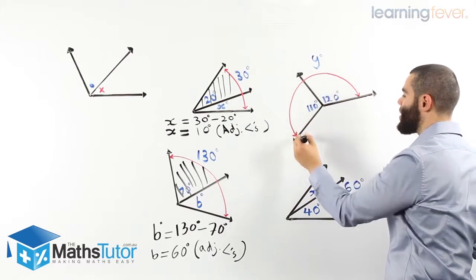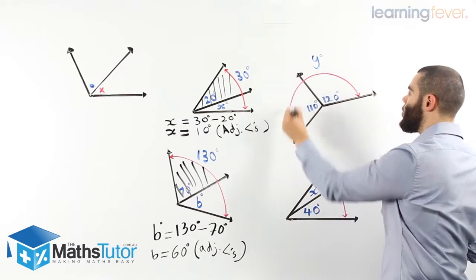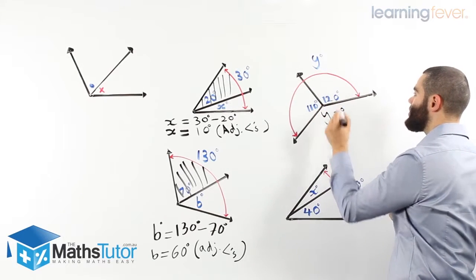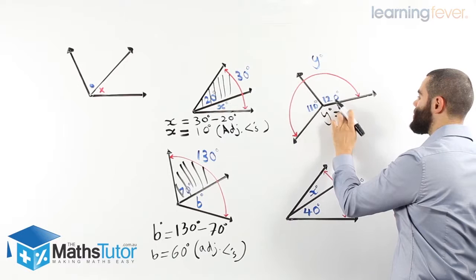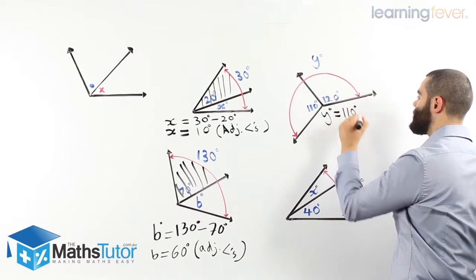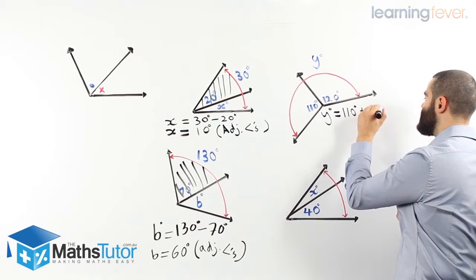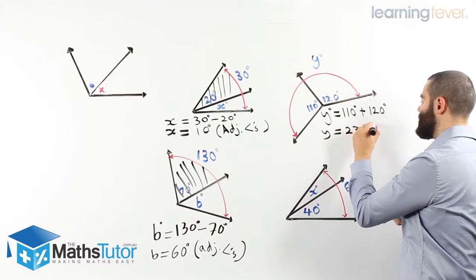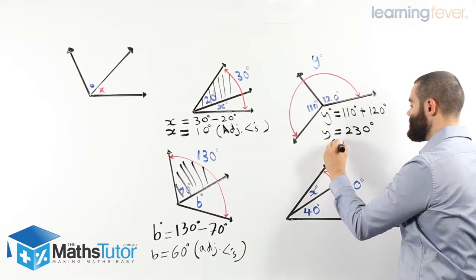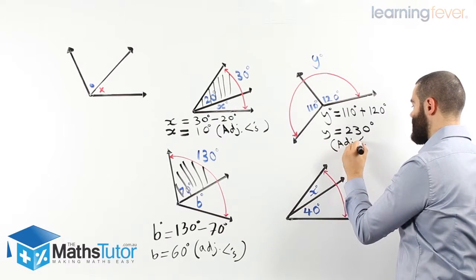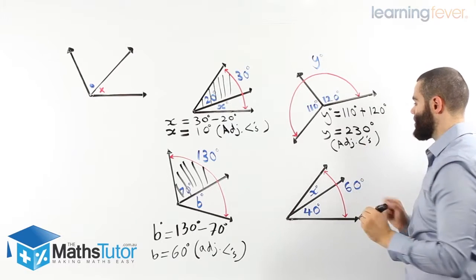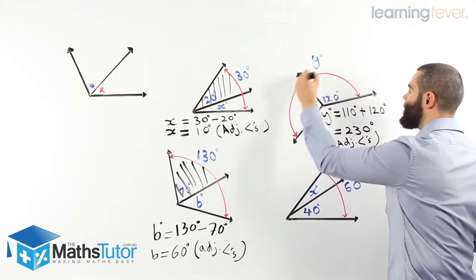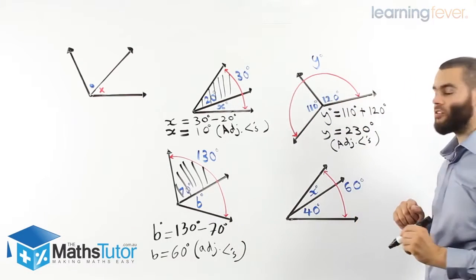So in total, we want to know what Y is. Y is the total of this angle here plus that angle there. Y equals 110 degrees plus 120 degrees. Y must be 230 degrees. Reason? Adjacent angles. That's our reason. We are saying 110 plus 120, they are adjacent angles. They make the total of 230 degrees.